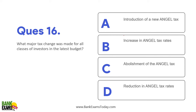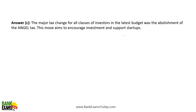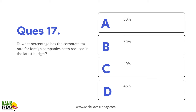What major tax change was made for all classes of investors? Angel tax has been abolished for all categories. To what percentage has corporate tax for foreign companies been reduced? It was 40% but now it is 35%.